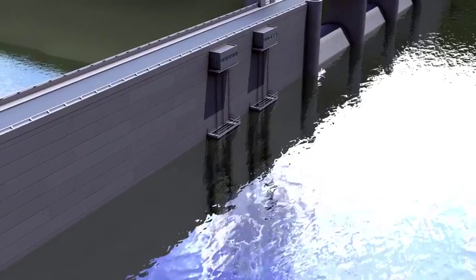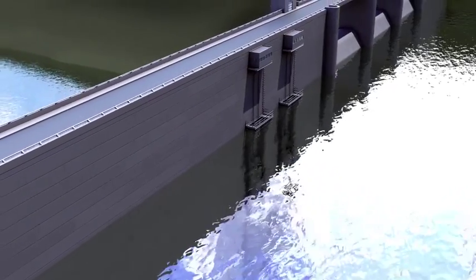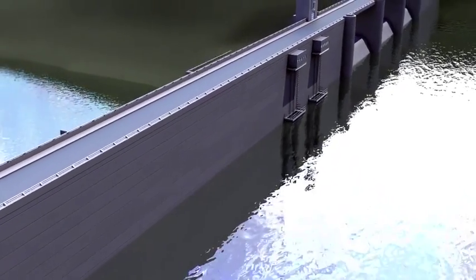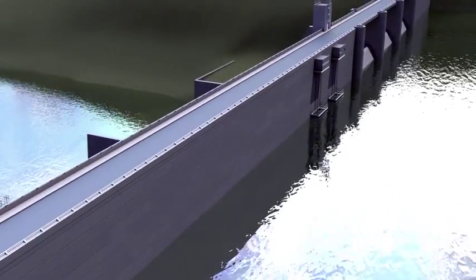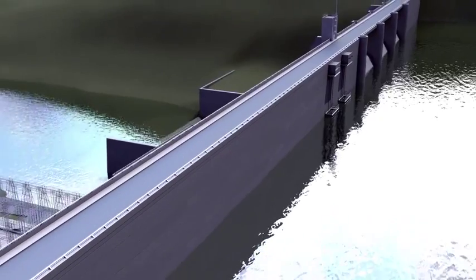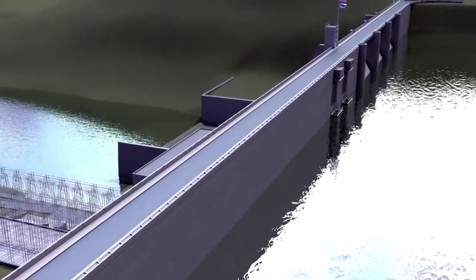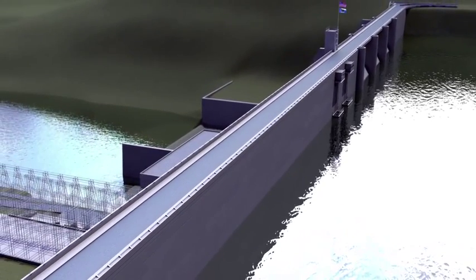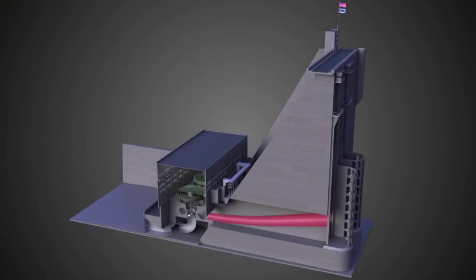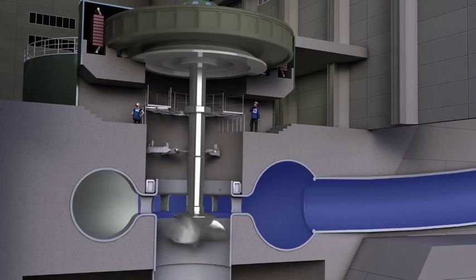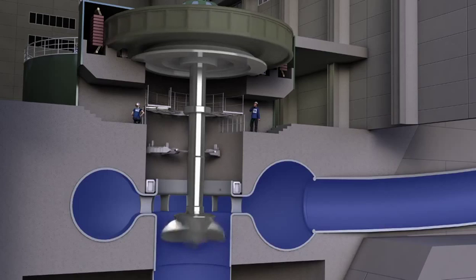When electricity is needed, some of the water in the reservoir is released through a water intake in the dam. Gravity causes the water to fall through a pipe inside the dam, called a penstock. The falling water spins a turbine,